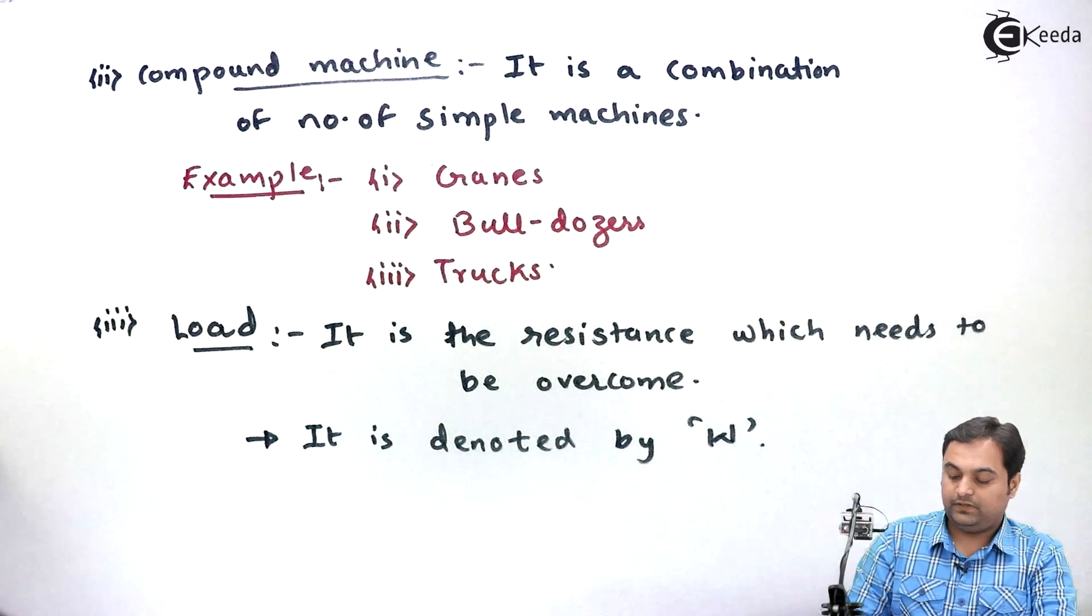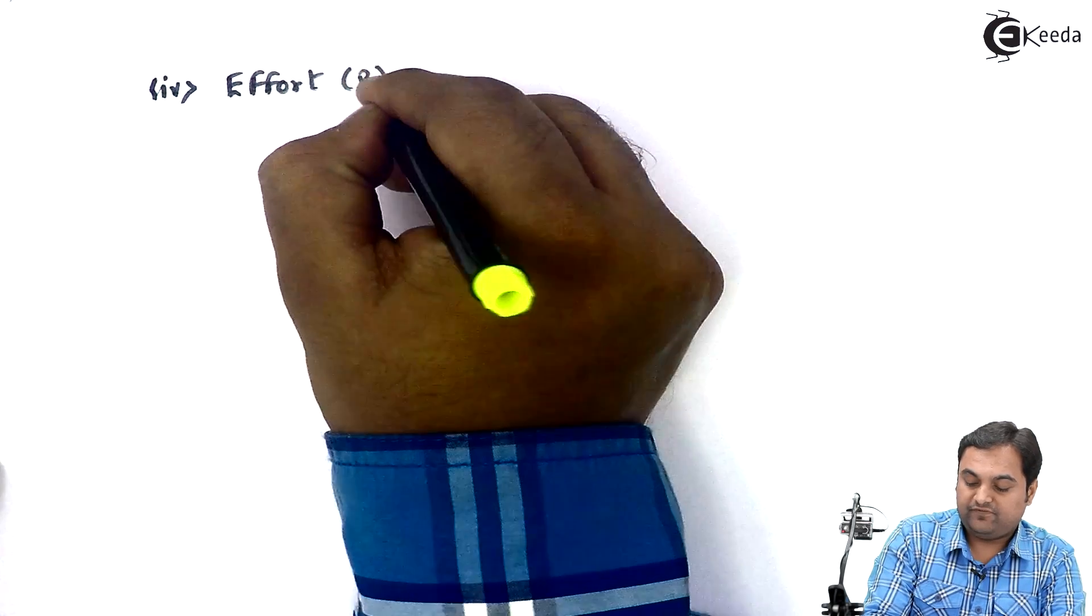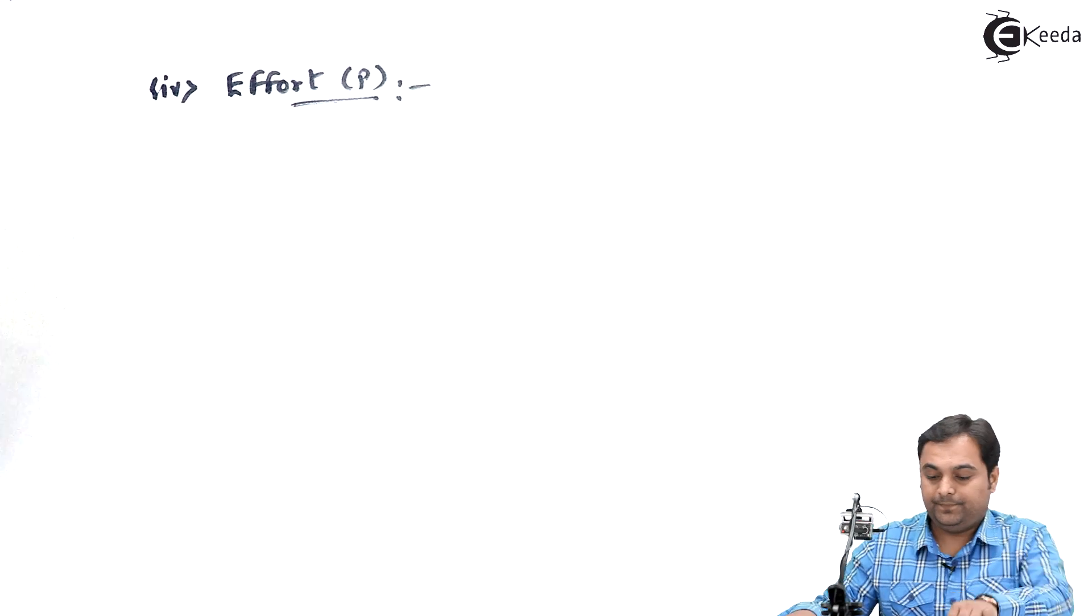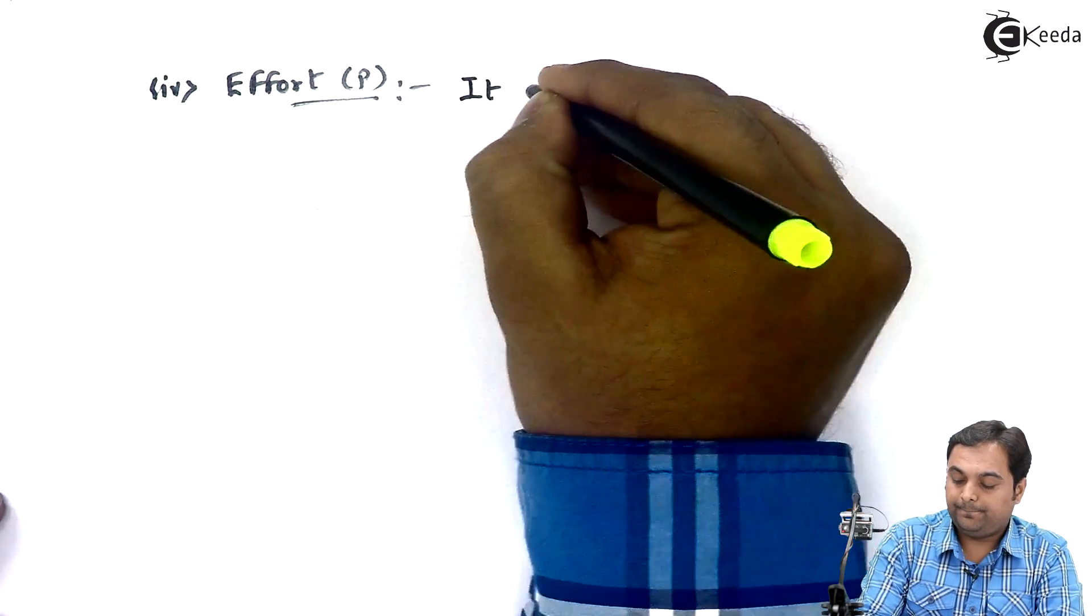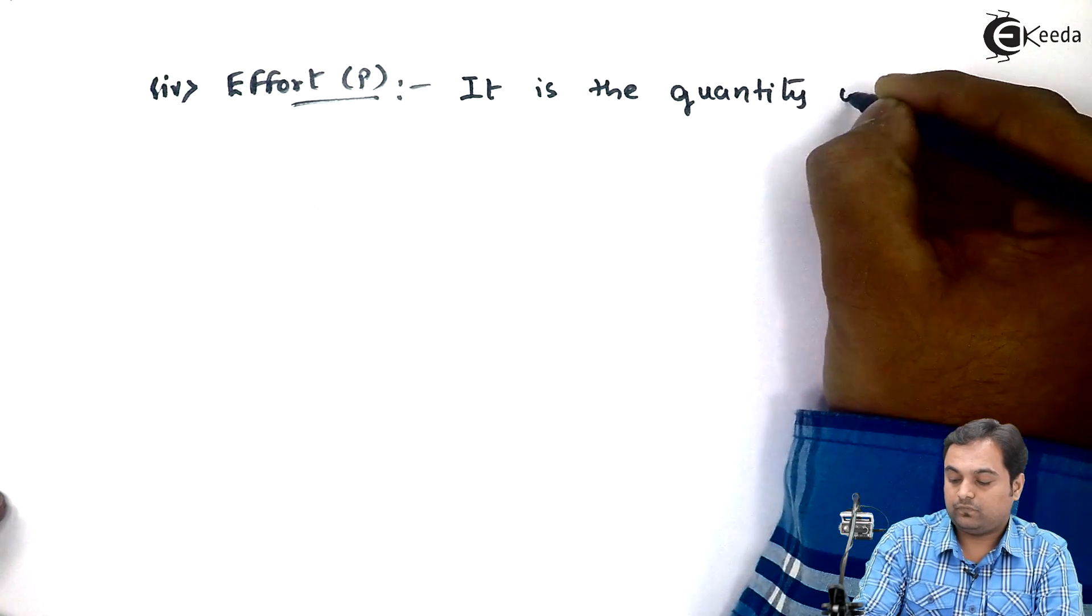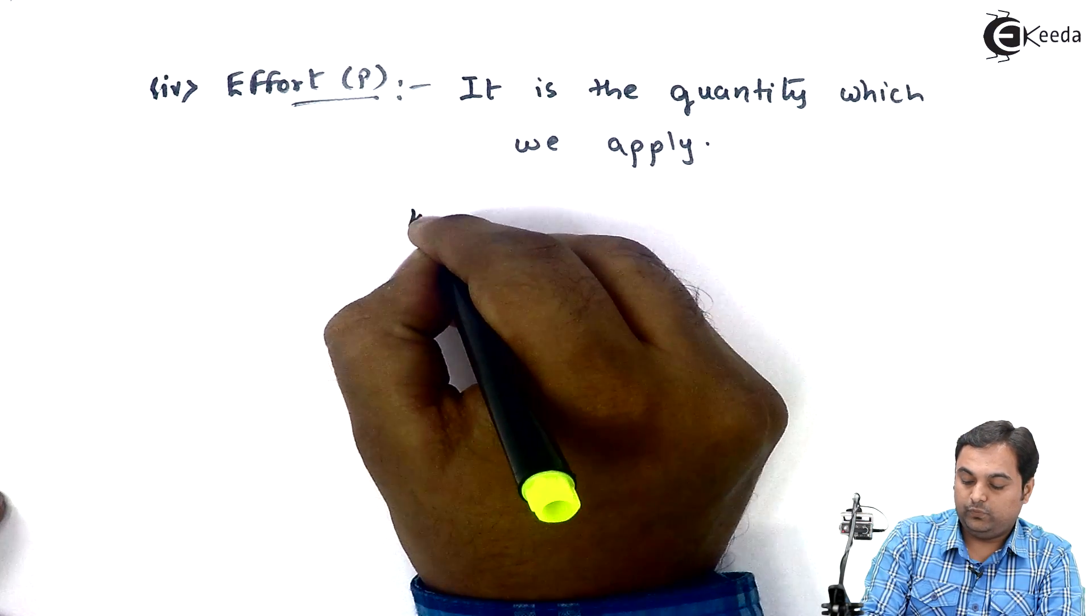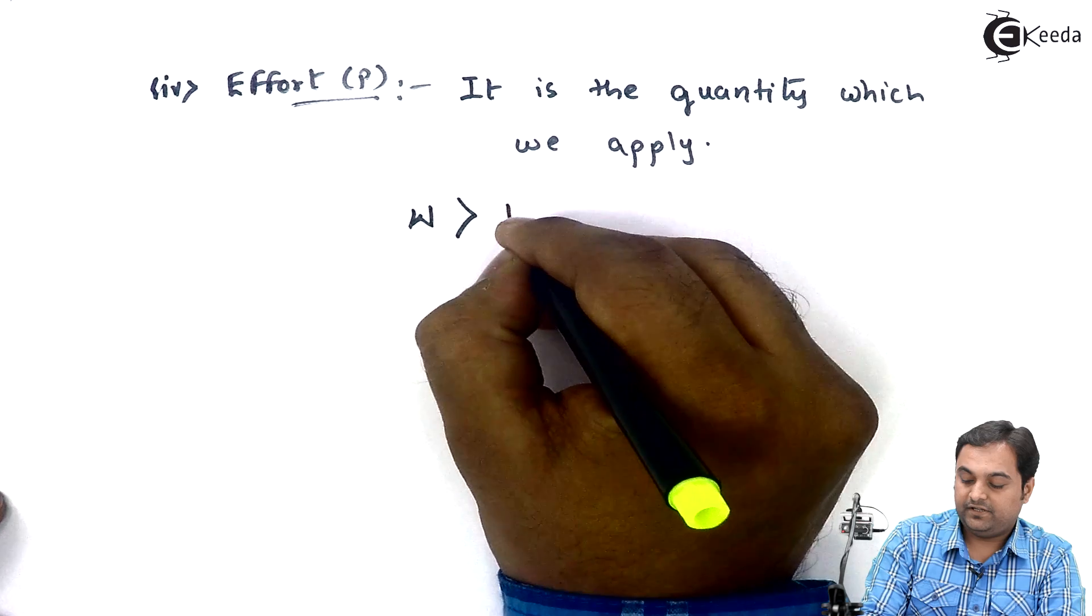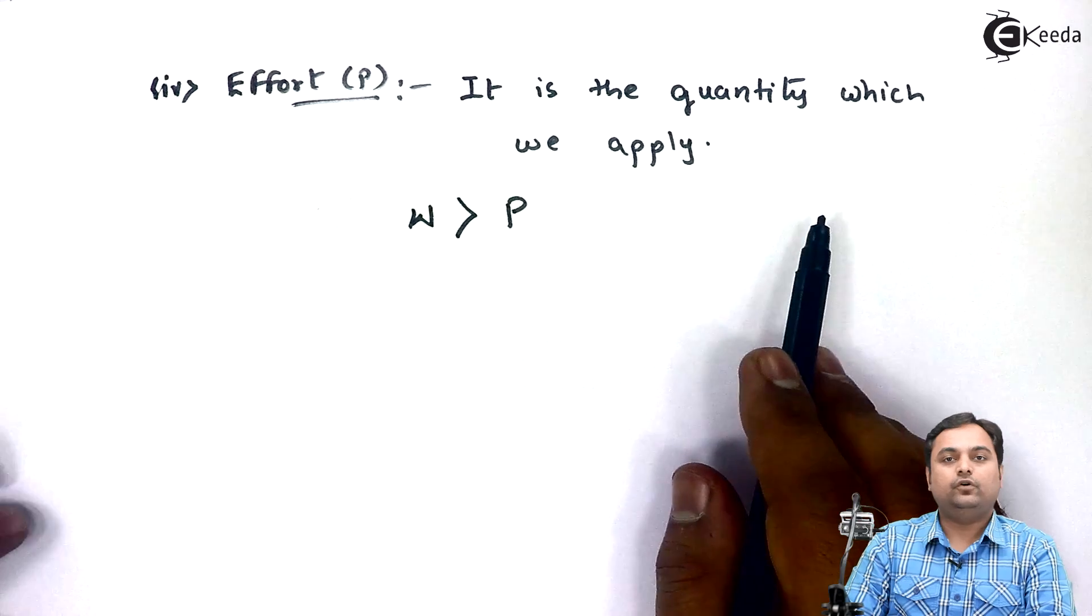Next, effort. Effort would be denoted by letter P. And here it is the quantity which we apply, and load will always be greater than effort for a simple machine.